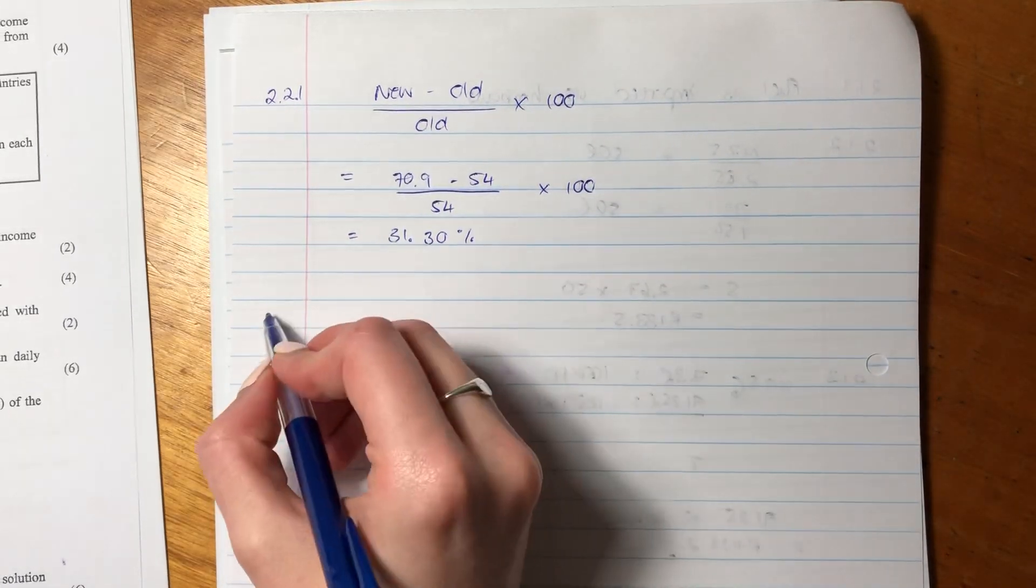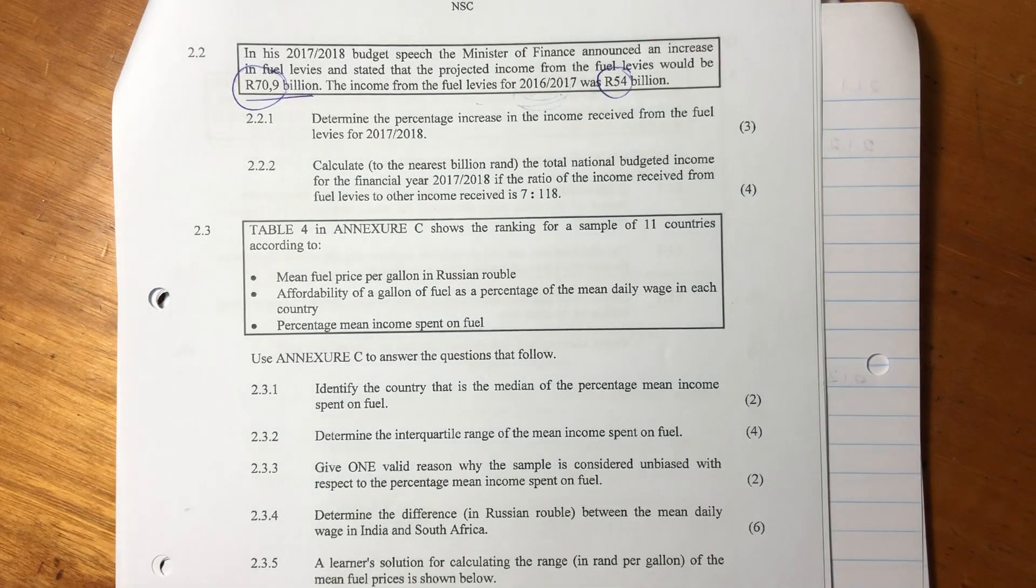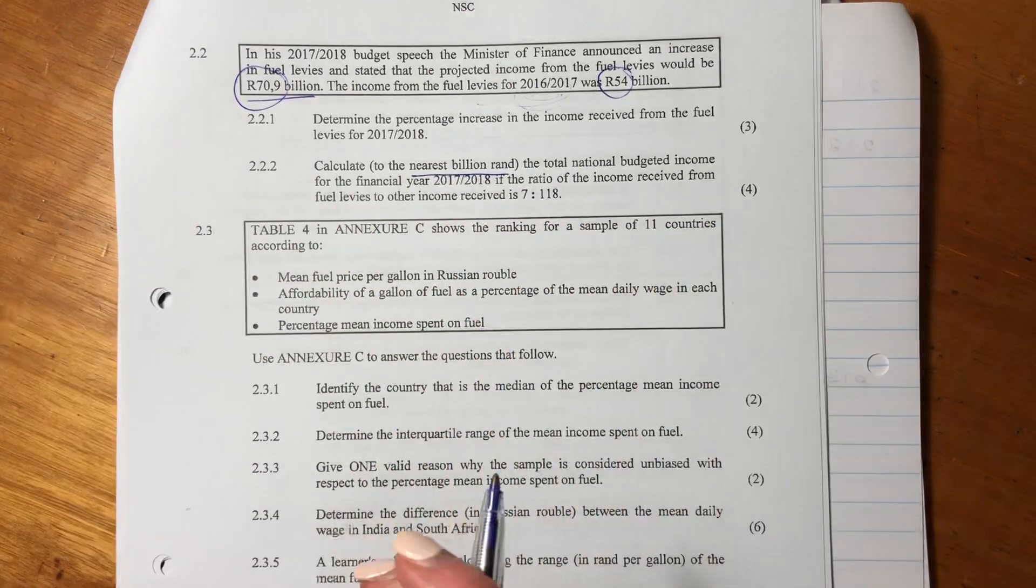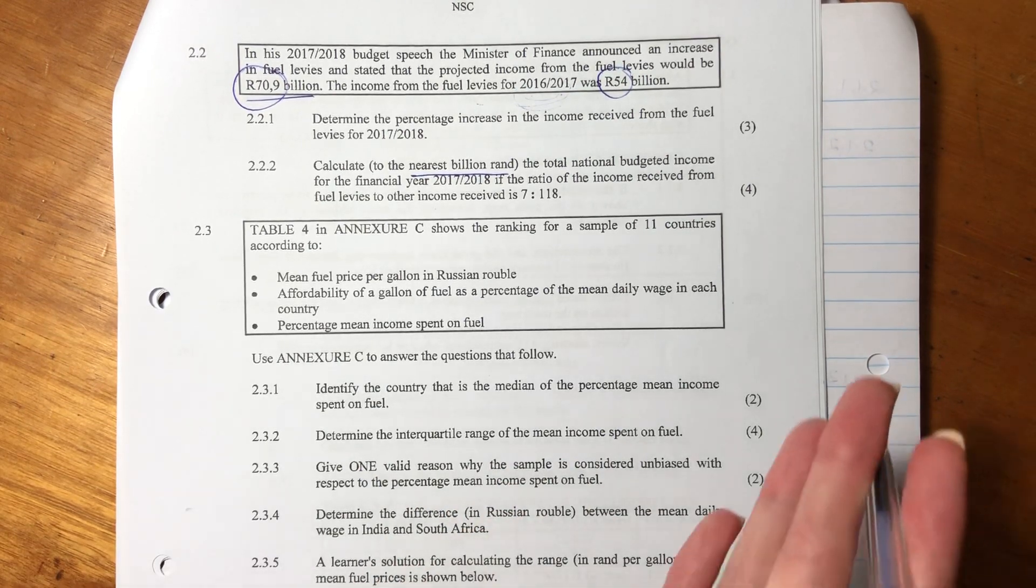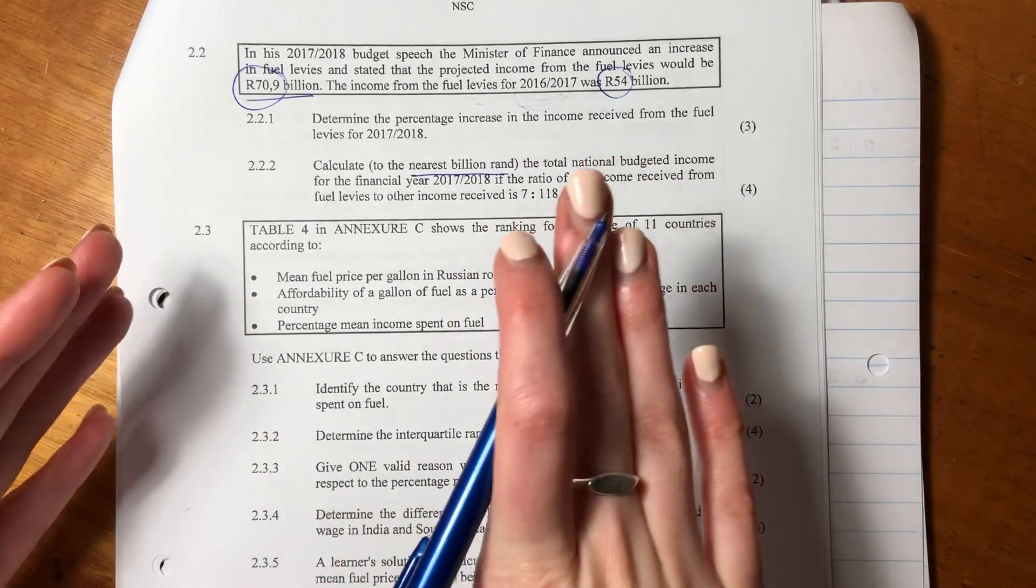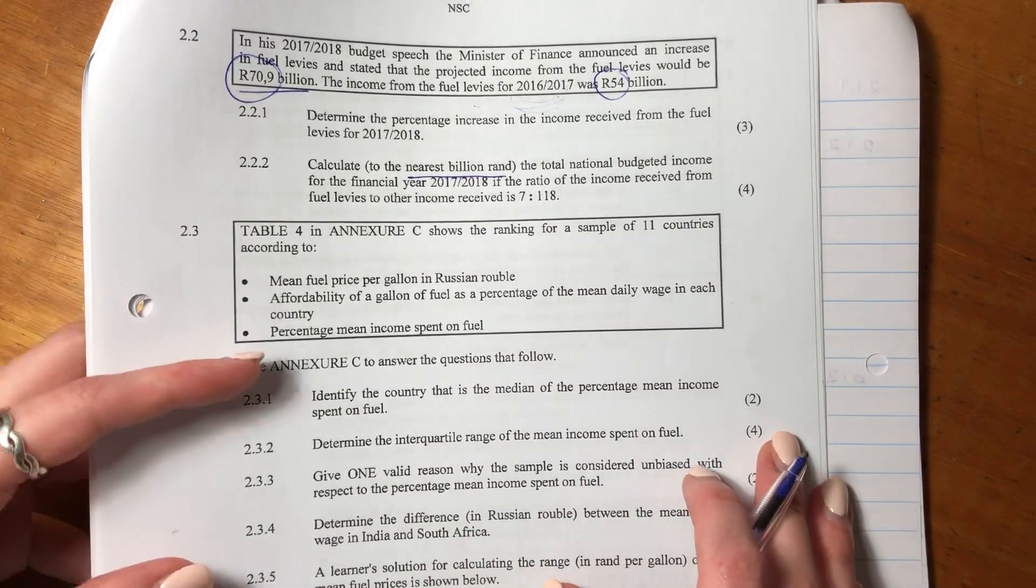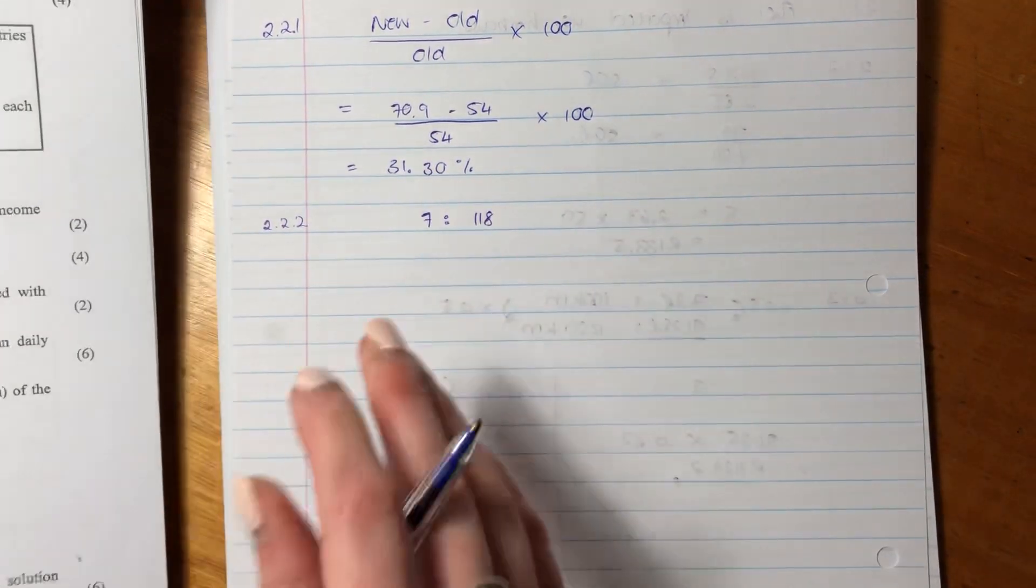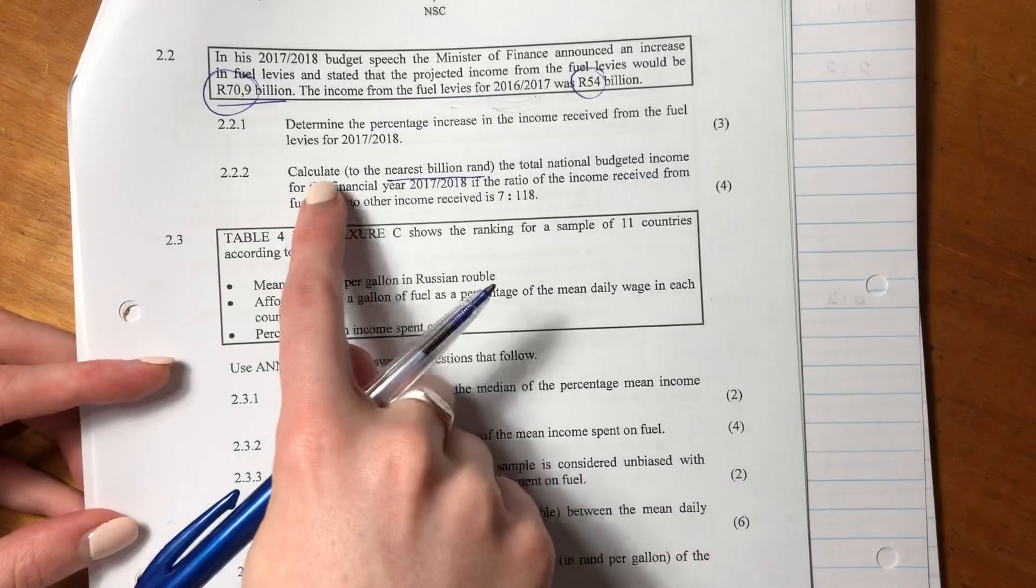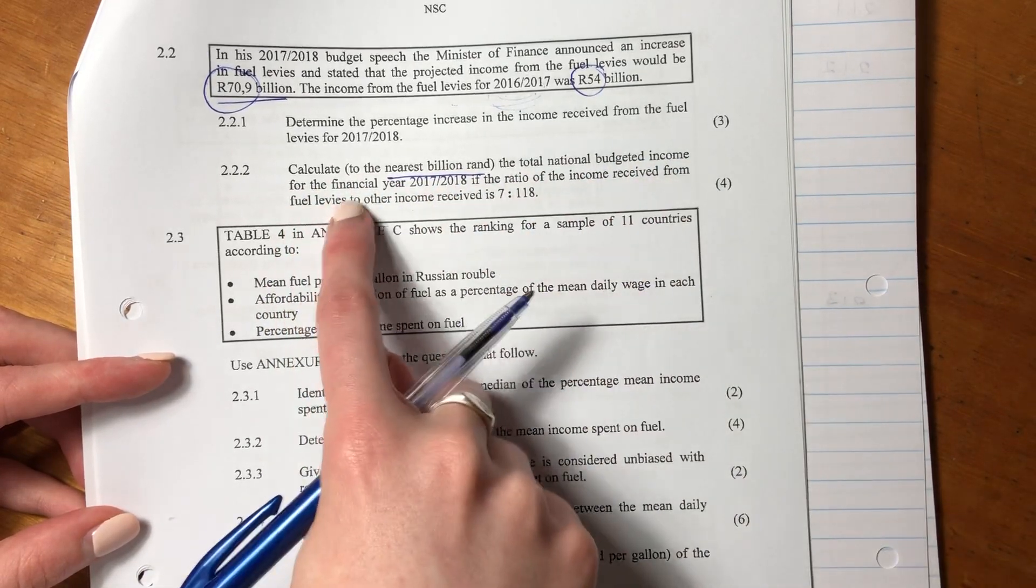Let's now look at the next question. It says, calculate to the nearest billion rand the total national budgeted income for the financial year 2017-2018, if the ratio of the income received from fuel levies to other income received is 7 to 118. So it's saying we have this ratio. Let's make sure we understand this ratio.